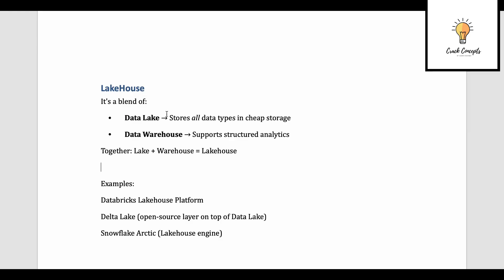Next is lake house. A lake house is a blend of data lake and data warehouse — taking 'lake' from data lake and 'house' from data warehouse. It is a modern data architecture that combines the scalability and flexibility of a data lake with the structure and performance of a data warehouse, all in a unified platform. It is the best of both worlds: it stores all types of unstructured data cheaply like a data lake, and also supports structured analytics and SQL queries like a data warehouse.